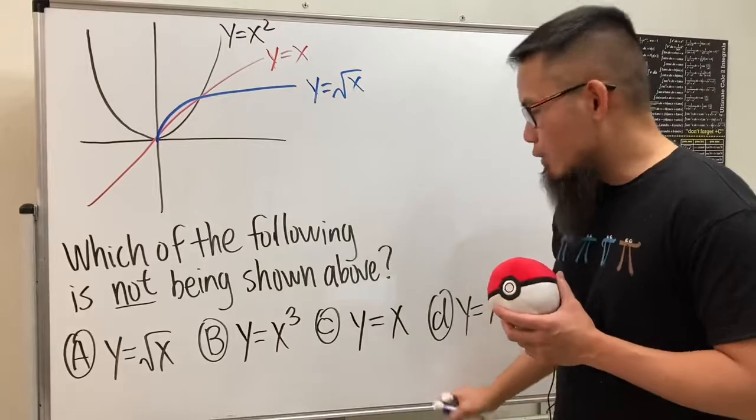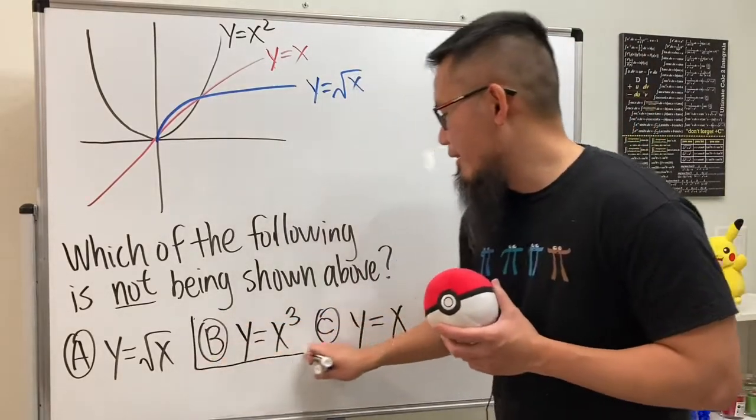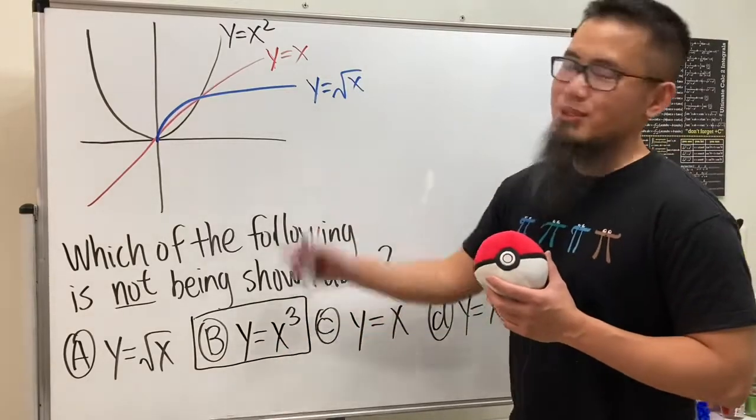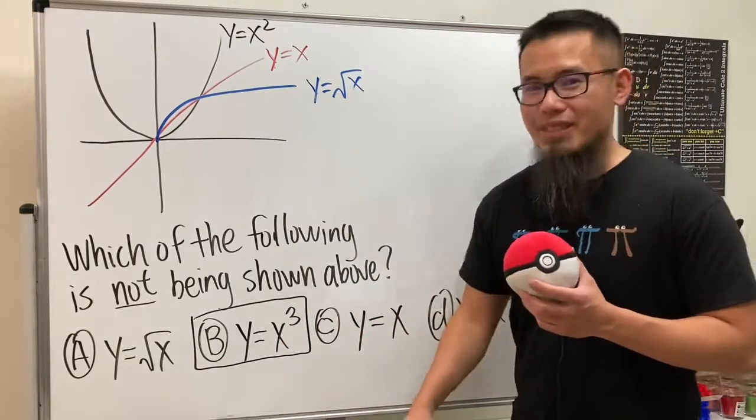Therefore, the answer will be b, because y is equal to x to the third power is not being shown here. So, that will be it.